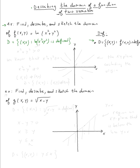What does it mean for ln(x² + y²) to be defined — when is it going to be a real number? Of course we want the condition x² + y² to be strictly positive. So the input of ln has to be strictly bigger than zero. We know that x² + y² is always greater than or equal to zero, so we just want to exclude the point where x² + y² = 0, which means we don't want (x, y) to be (0, 0).